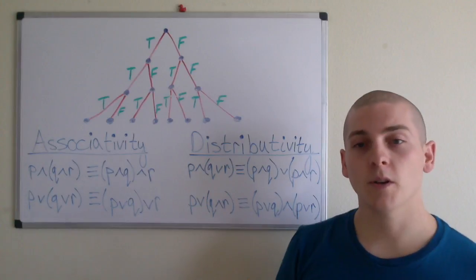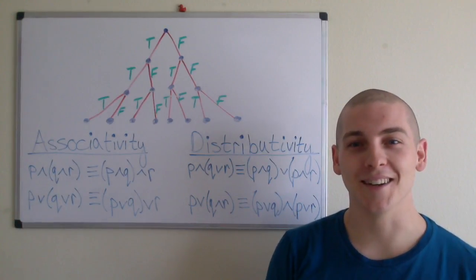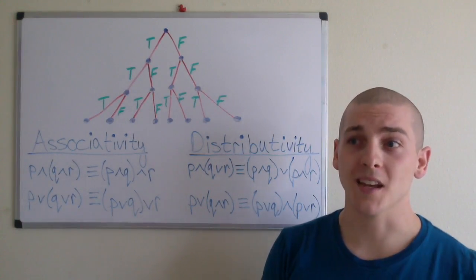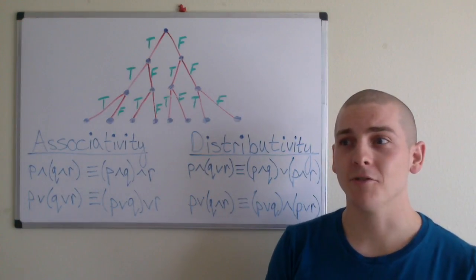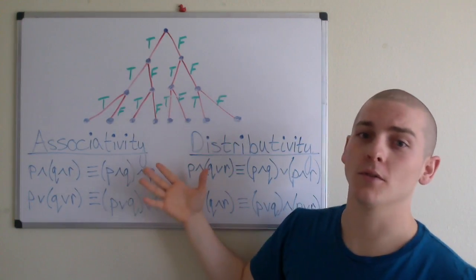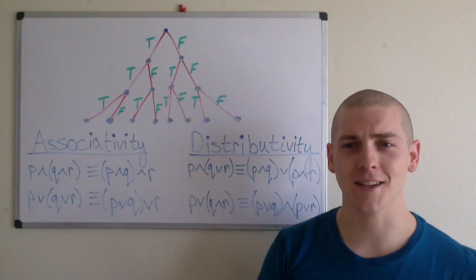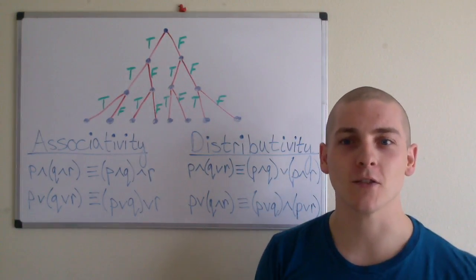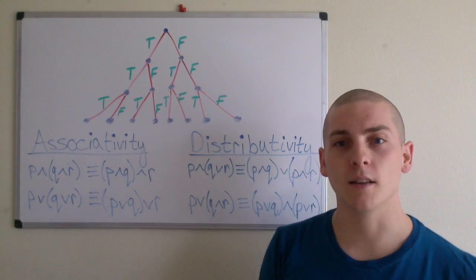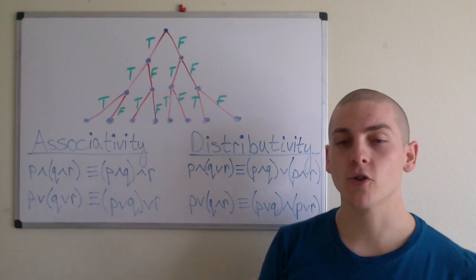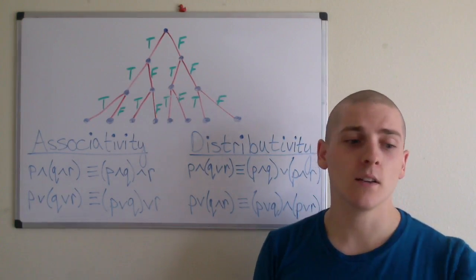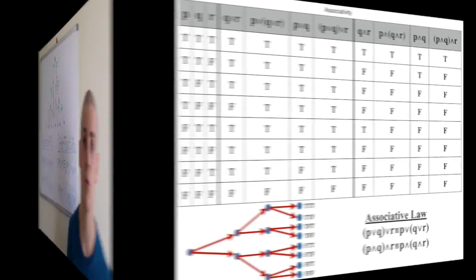So there's not much to be said about the associative law or distributive law, and unfortunately, I can't fit the truth table to prove these on my whiteboard, and it gets really messy. So I'm going to have them at the end of the video and go through them. Make sure you understand them, and if you don't, go back and review the concepts of truth tables.